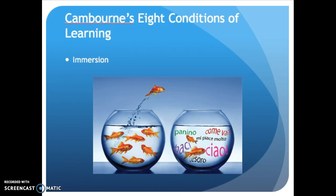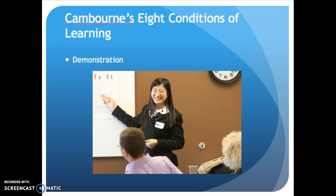The first condition is immersion — we often see this with language immersion programs. In this condition, the student is surrounded by the skill set they are expected to learn. The next is demonstration: the student must be able to see that the thing they are expected to learn is something that actually can be done; they have to witness someone else doing it.